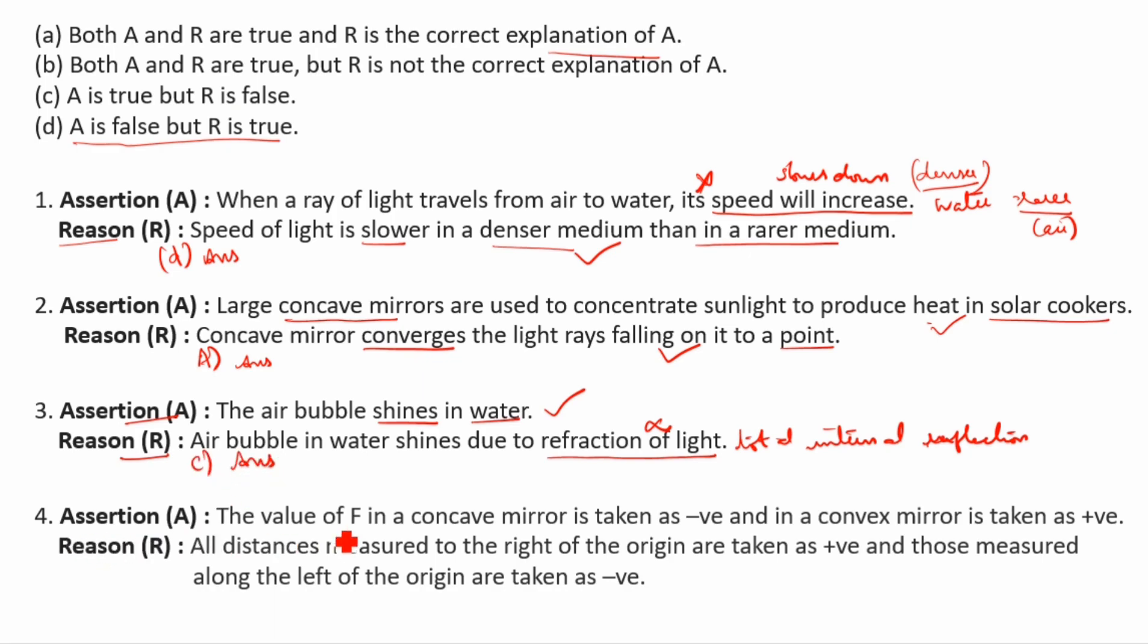Fourth question assertion: The value of F in a concave mirror is taken as negative. F means focal, F focal length. So F is focal length, you see this is concave mirror.